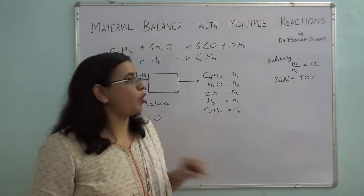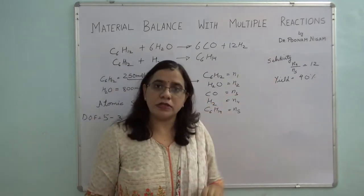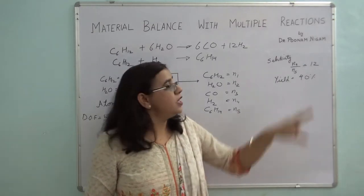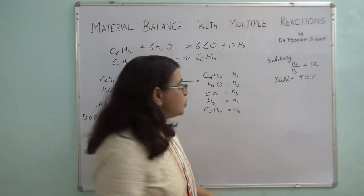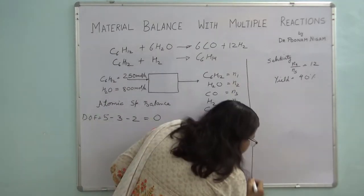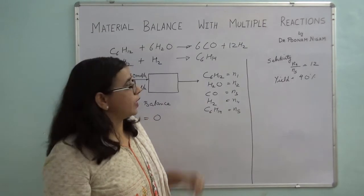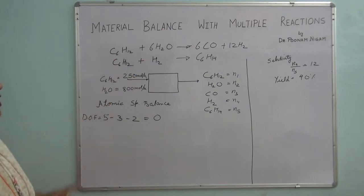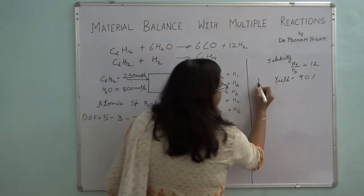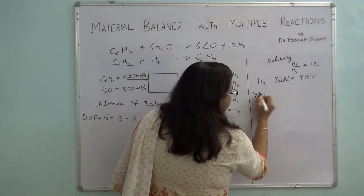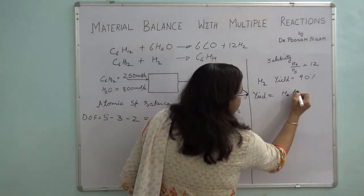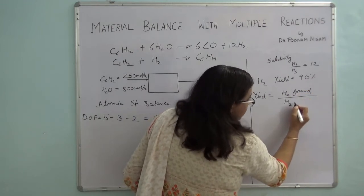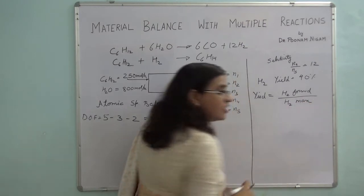Always start your problem by first using the process specifications, then do the inert balance, and then apply whichever method you want. This remains the same for all methods. First, let's use the yield. Yield of hydrogen is 40%. Yield is defined as hydrogen which is formed divided by the maximum hydrogen which can be formed — H2 max — if the reaction goes to completion and no side reactions take place.